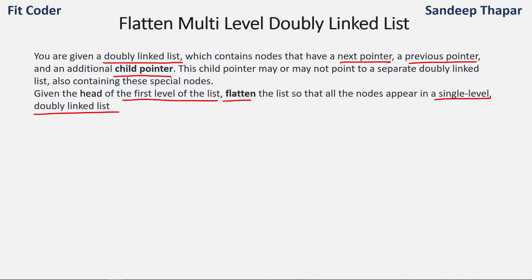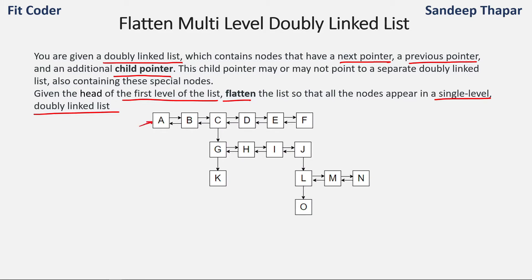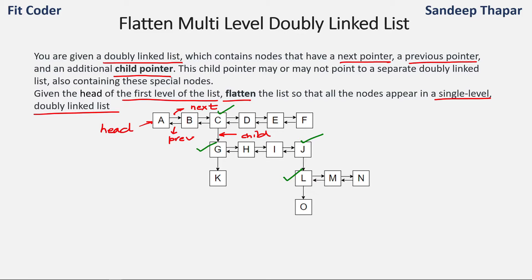Let's see an example. Here A is the head of the linked list and each node has three pointers: the next pointer, the previous pointer, and the child pointer shown as a down arrow. For some nodes this child pointer is null, whereas for nodes C, G, J, and L we have a valid child pointer. This child pointer points to the next level of this doubly linked list.